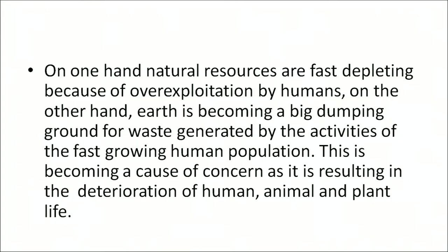We are dependent on both biotic and abiotic natural resources. On one hand, natural resources are fast depleting because of over-exploitation by humans. On the other hand, earth is becoming a big dumping ground for waste generated by the fast-growing human population, resulting in the deterioration of human, animal, and plant life. It is important that by overuse of natural resources we do not upset the balance in nature. Let us care for our environment. Now it is time to talk about the relationship between primitive humans, human society, and environment — how primitive humans discovered agriculture and began leading a settled life.